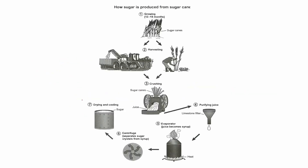Step two is to spend some time on the diagram to understand it. Here we've got seven steps or stages. We need to understand what happens at each stage. All the necessary words are given. Step one is growing — they grow sugarcane and wait for 12 to 18 months, then harvest it either manually or mechanically. In stage three, they crush the sugarcane to extract juice, then purify it using a limestone filter, then heat the juice to make syrup. After that, they use a centrifuge to separate sugar from syrup, and finally they cool and dry it to make sugar.